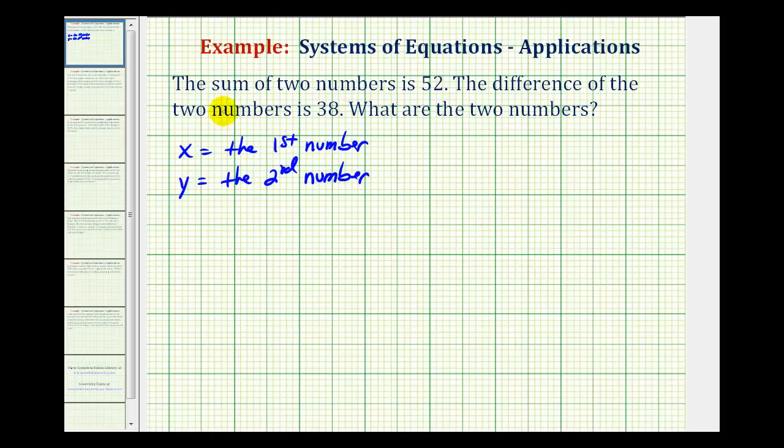The first sentence tells us the sum of the two numbers is fifty-two. And sum means addition, so the first equation is going to be x plus y equals fifty-two.